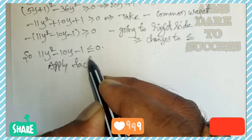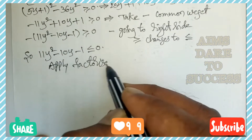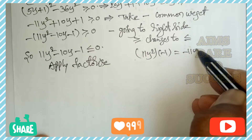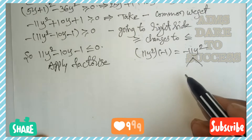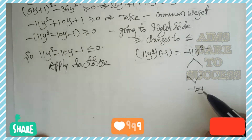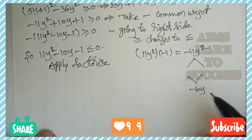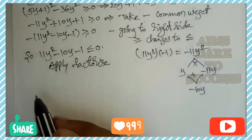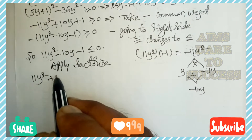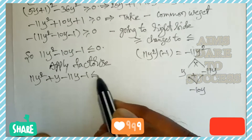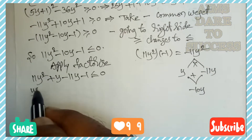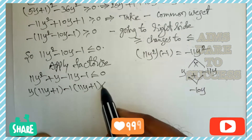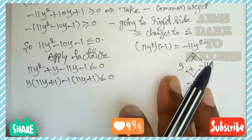This is a quadratic expression, so we factorize. Multiplying first and last: 11 × (−1) = −11y². The middle term is −10y. We split: y − 11y = −10y, and y × (−11y) = −11y². Substituting: 11y² + y − 11y − 1 ≤ 0. Taking y common: y(11y + 1) − 1(11y + 1) ≤ 0.